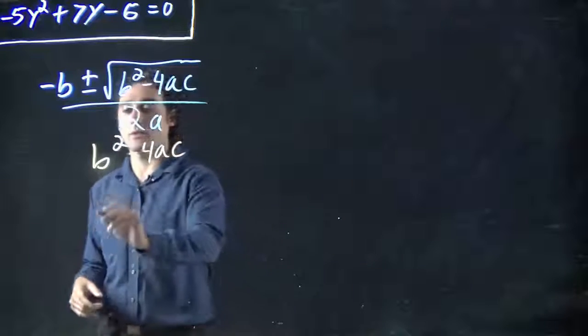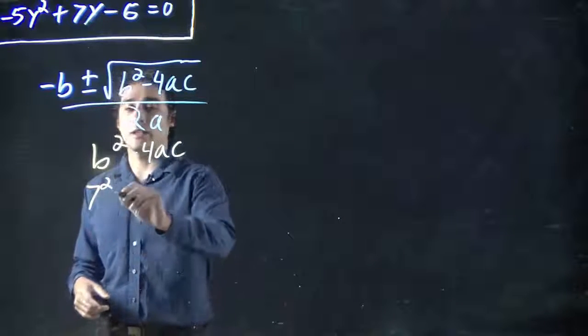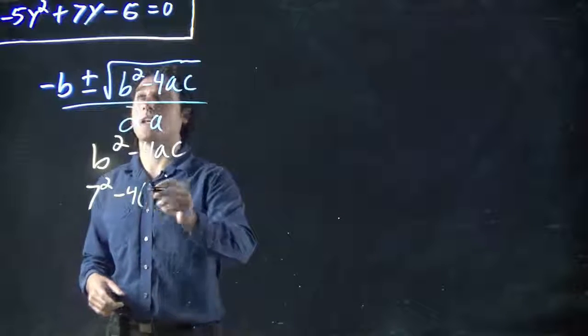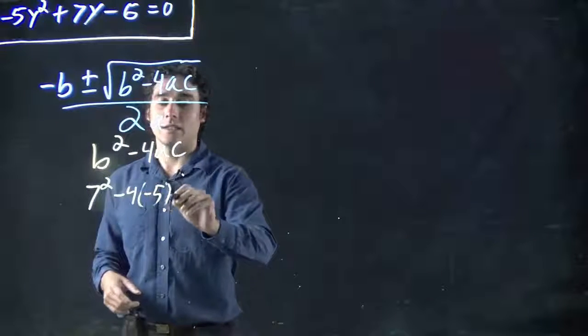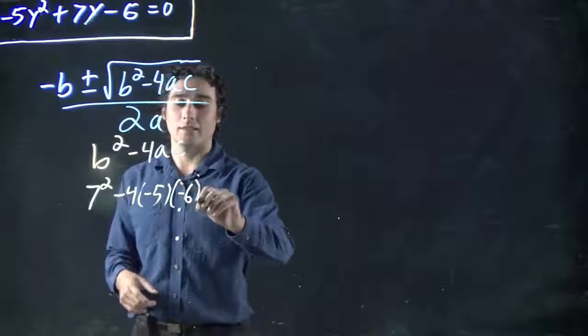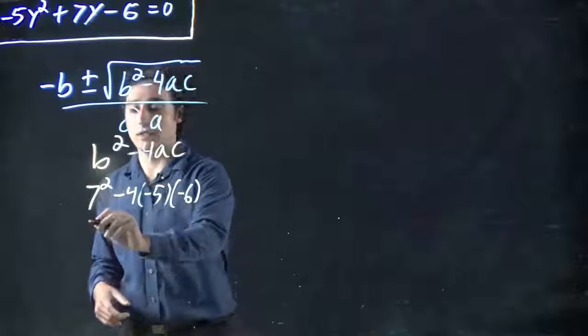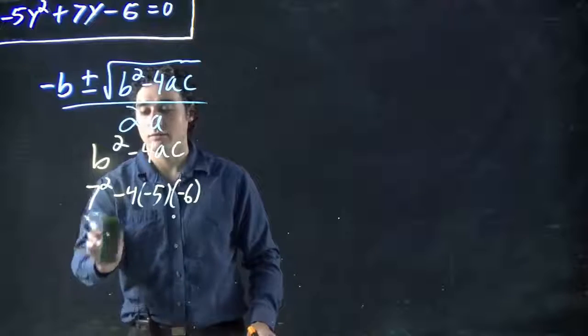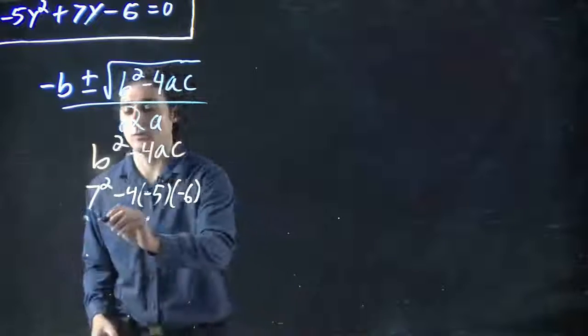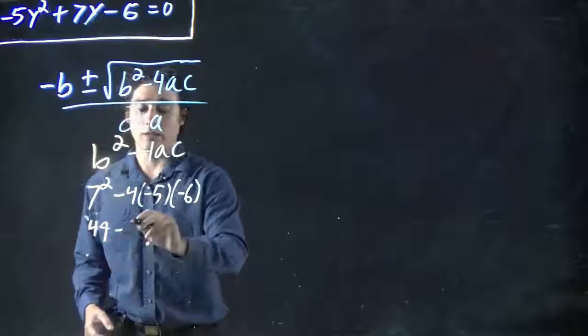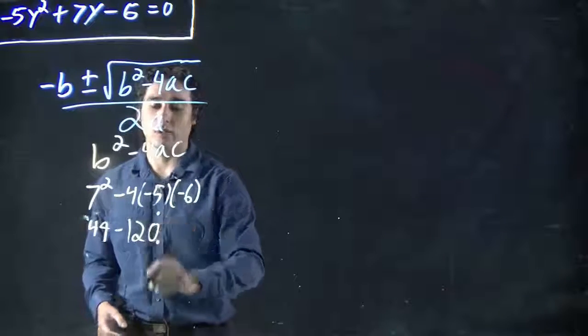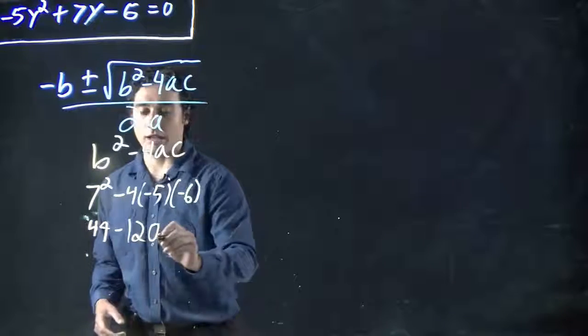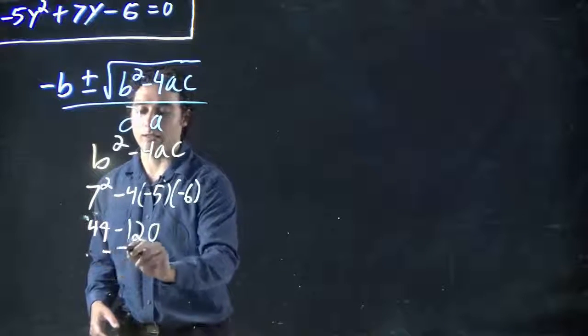So b squared, 7 squared, minus 4 times a, minus 5, times c, minus 6. Well what do we got? 7 squared is 49 minus we determined this was 120. Well that is minus 71.